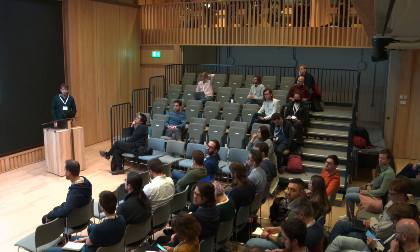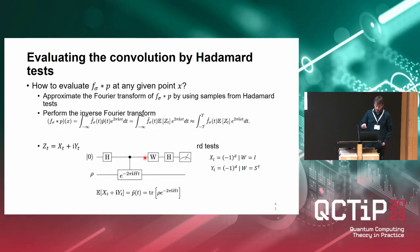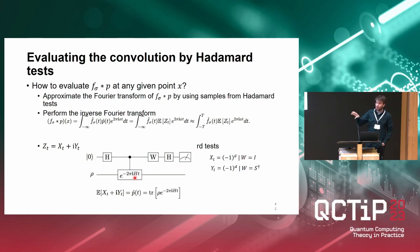Q: Is the H in the circuit the Hamiltonian or a Hadamard gate? A: The H at the beginning and end are Hadamard gates. This is a phase or inverse gate. And this is the controlled Hamiltonian evolution. The H in the lower part is the Hamiltonian of the problem you care about, not a Hadamard gate.